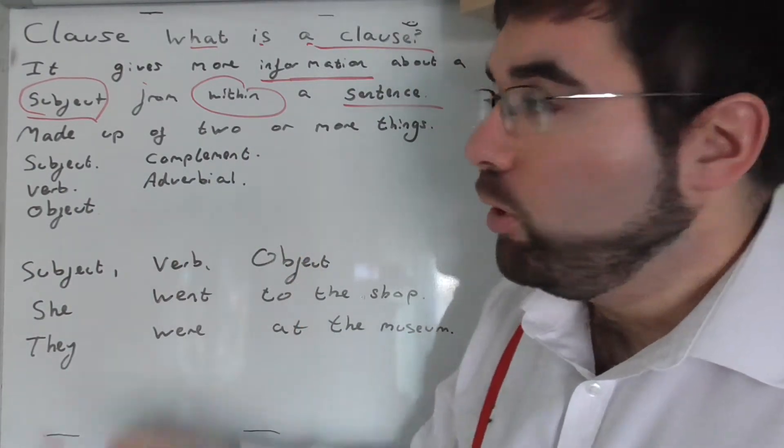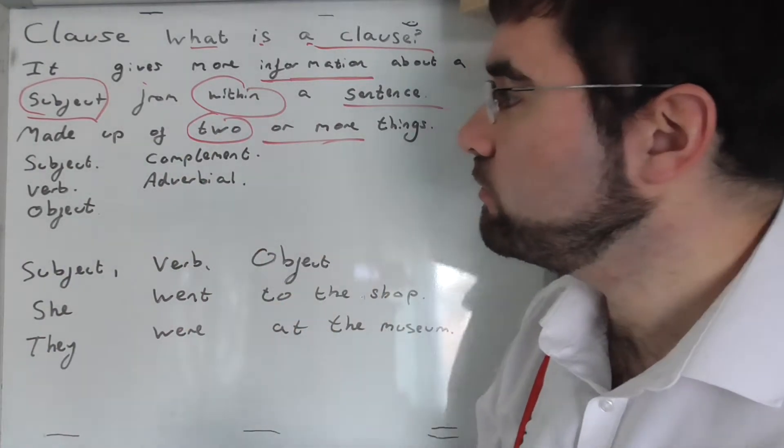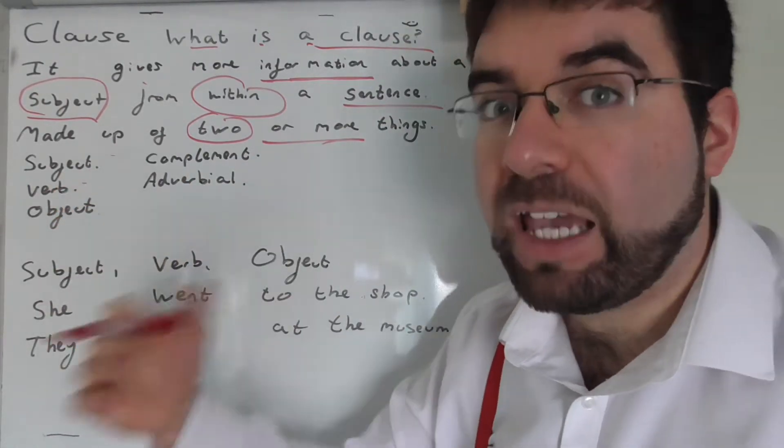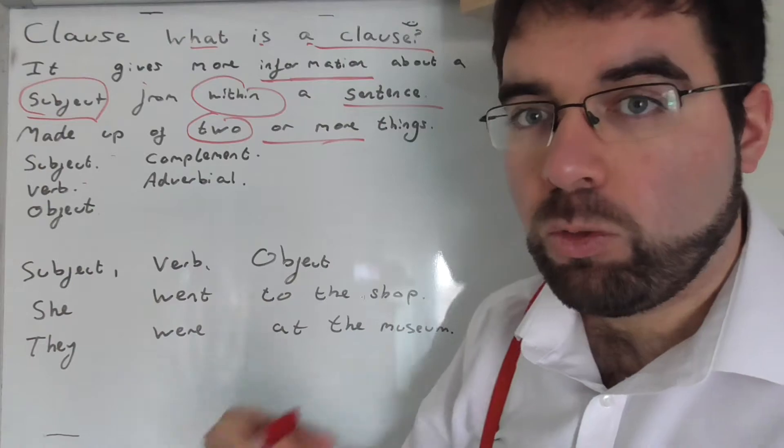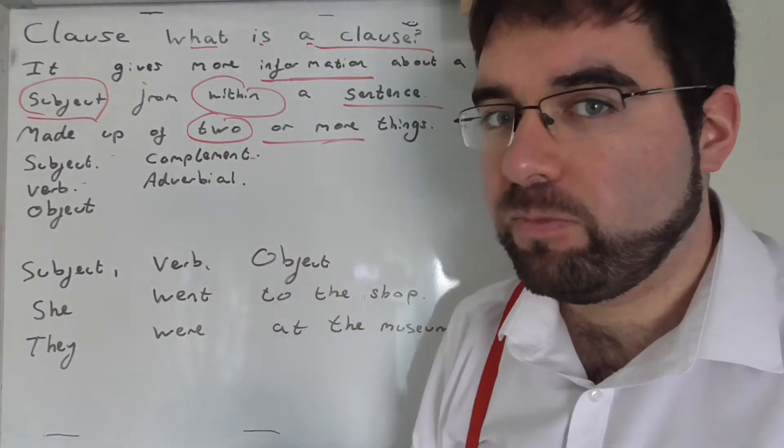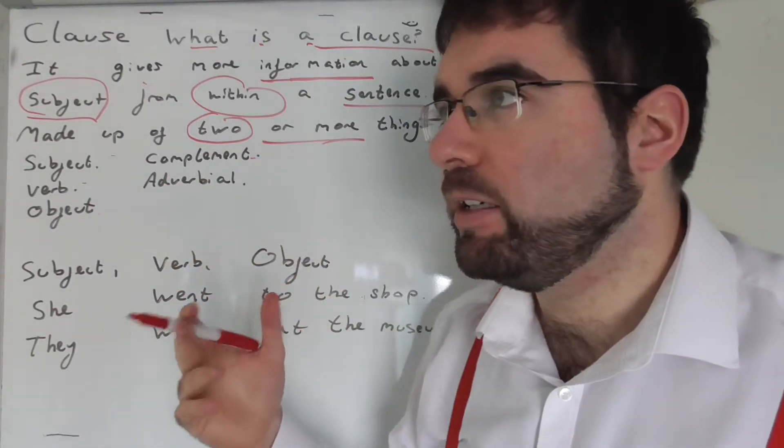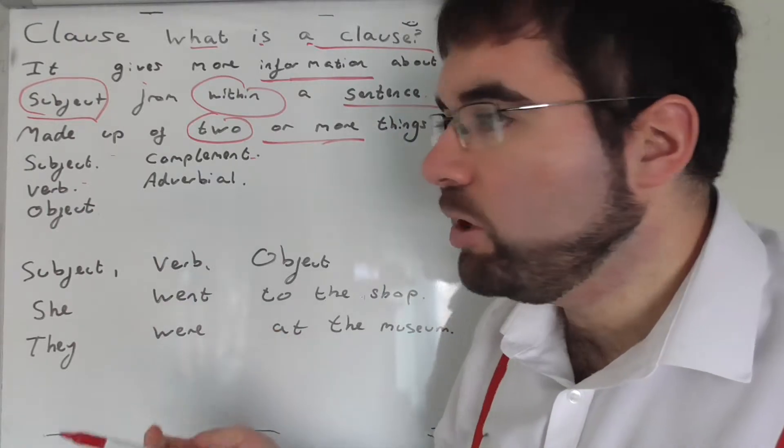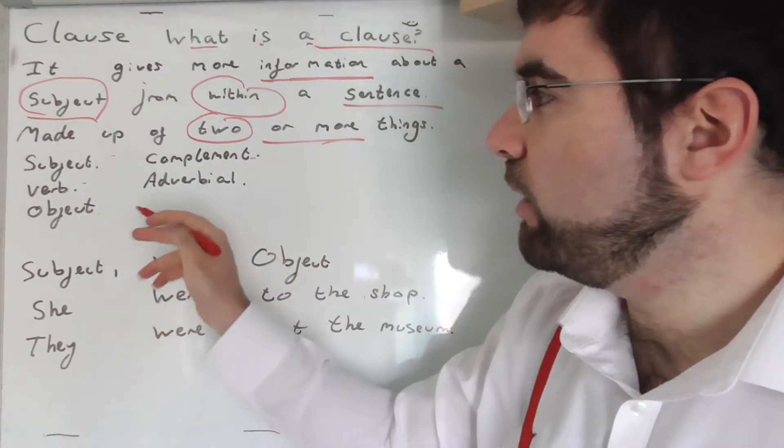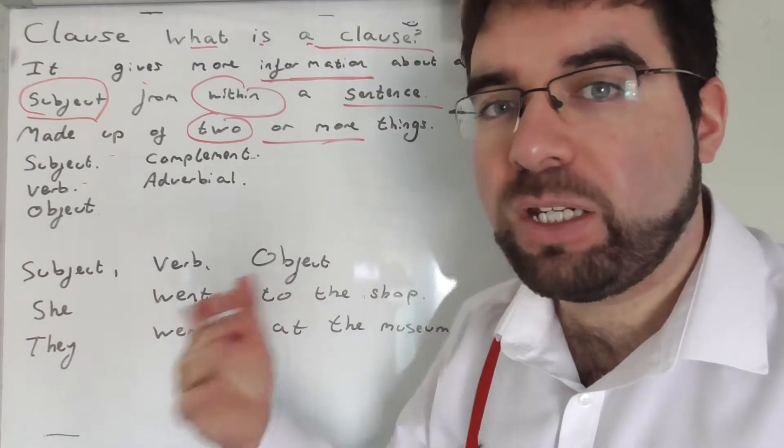So they're normally made up of two or more things. Subject - who the sentence is about. Verb - action. Object - what is used in the sentence. Complement - describing something. An adverb - something that occurs, something that we can describe with quickly. For example, quickly. Normally, words are ly, ways of describing things quickly.